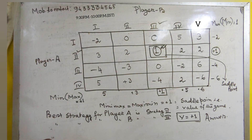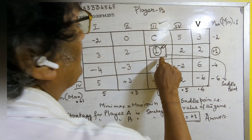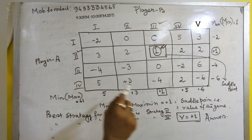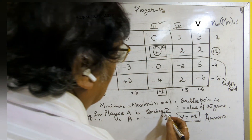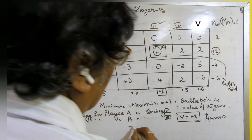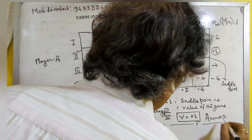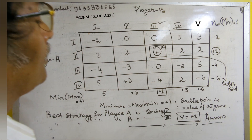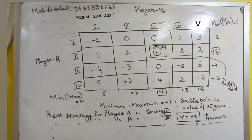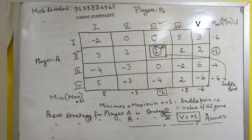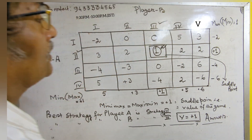What strategy will be selected by Player A and Player B? Because the equilibrium point is here, Player A will select strategy 2, which is the best strategy for Player A. And Player B will select strategy 3, which is the best strategy for Player B. In this way, by applying minimax and maximin criteria, we can find the solution of a game problem — the value of the game, and the best strategies to be selected by Player A and Player B.